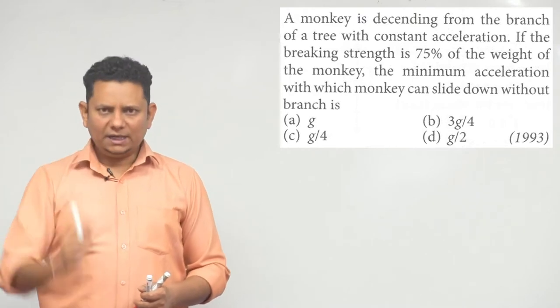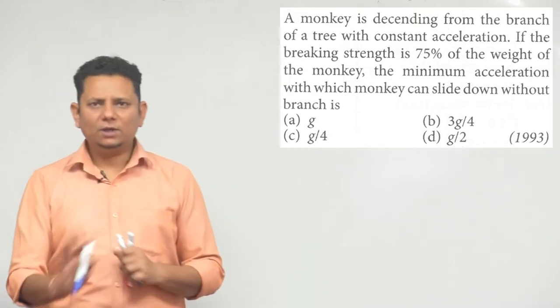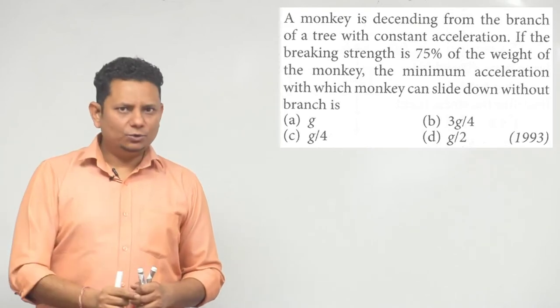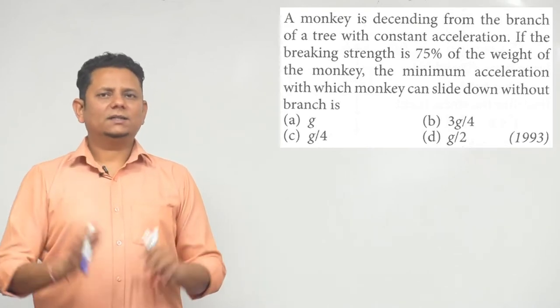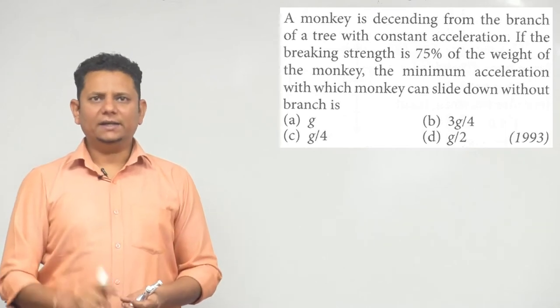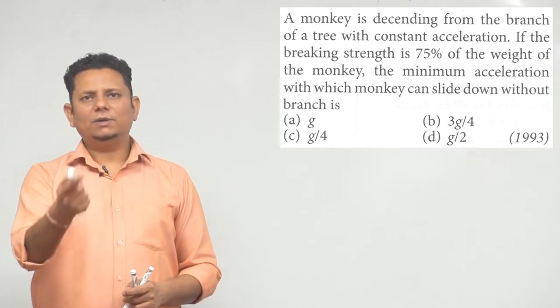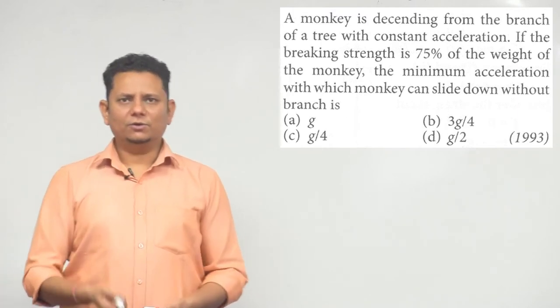So, the monkey is on a branch from above. The branch is a little bit smaller - the branch is not able to support the monkey's full weight. It will support a maximum of 3 by 4 or 75% of the mass of the monkey. Let us find how much acceleration there will be. The options are G, G by 4, G by 2, or 3G by 4.